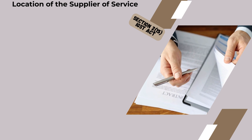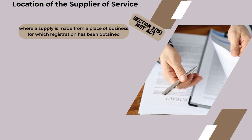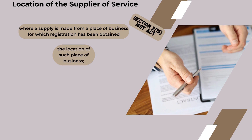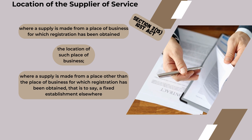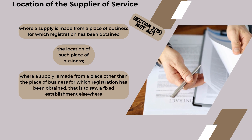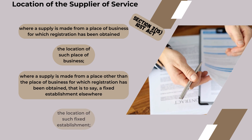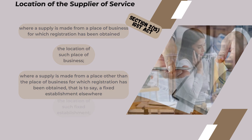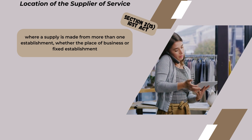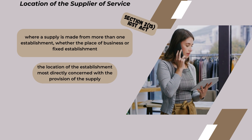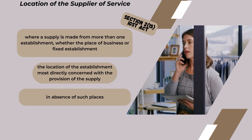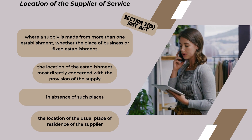Location of the Supplier of Service: Where a supply is made from a place of business for which registration has been obtained, the location of such place of business applies. Where a supply is made from a fixed establishment elsewhere, the location of such fixed establishment applies. Where a supply is made from more than one establishment, whether a place of business or fixed establishment, the location of the establishment most directly concerned with the provision of the supply applies. In absence of such places, the location of the usual place of residence of the supplier applies.